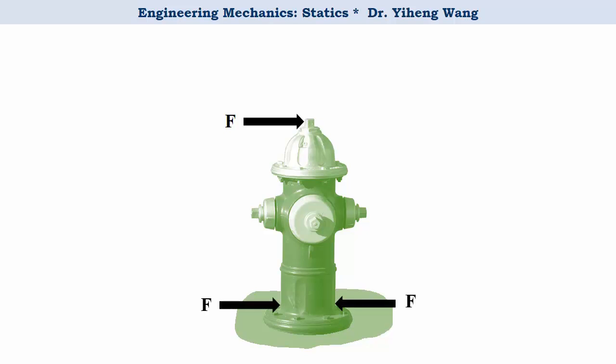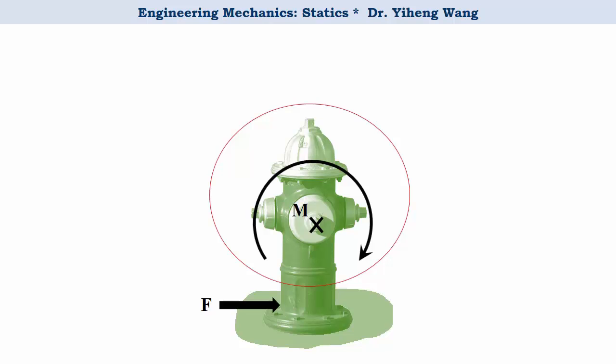We can add a pair of cancelling forces to this fire hydrant without changing the load status. But notice, these two forces now create a couple moment, and can be represented with the cross symbol indicating that the direction of the moment vector is pointing into the screen. You can imagine an arrow shooting into the screen. Now this force still provides a translational tendency to push the fire hydrant to the right, while this couple moment creates the clockwise rotational effect on the fire hydrant as well.